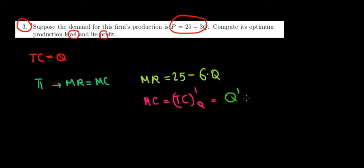Finding marginal revenue is straightforward - it's the price function with twice the slope. So MR = 25 - 2(3)Q = 25 - 6Q. The marginal cost is the derivative of the total cost with respect to quantity. The derivative of Q with respect to Q equals 1, so MC = 1.